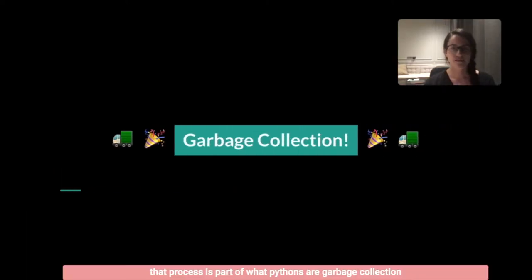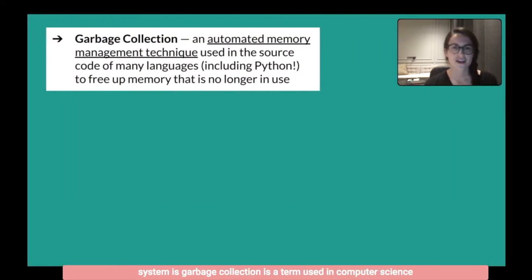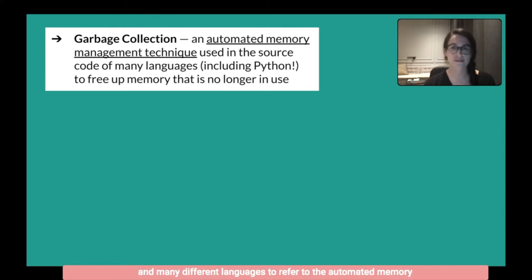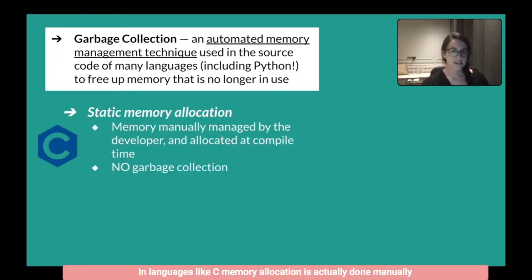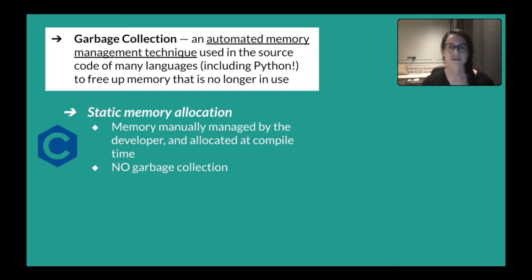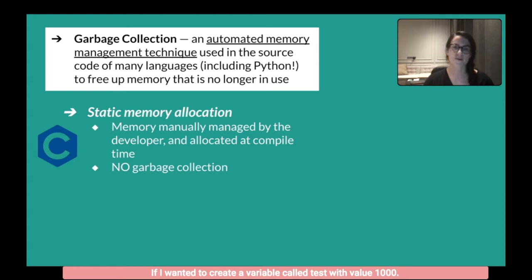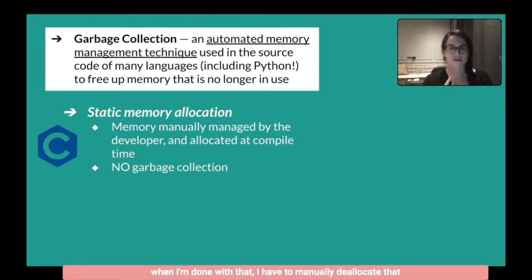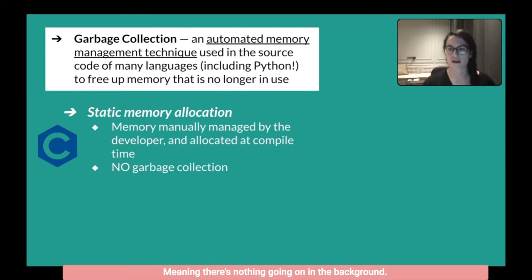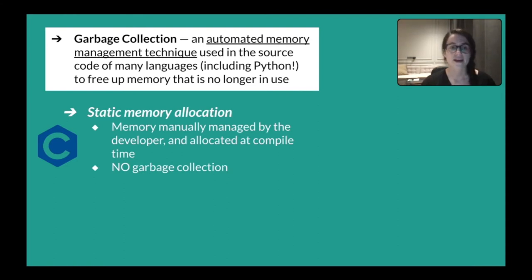That process is part of what Python's garbage collection system is. Garbage collection is a term used in computer science across many languages to refer to the automated memory management technique used to free up memory that's no longer in use. In languages like C, memory allocation is done manually by a developer — a pretty intensive process. If I want to create a variable called 'test' with value 1000, I have to first set out space for it, figure out how much it needs. Then I utilize it in my methods or functions, and when I'm done, I have to manually deallocate that space. There's no garbage collection — nothing going on in the background — it's all manual.